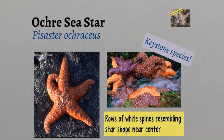Ochre sea stars are considered a keystone species in intertidal habitats. They feed mainly on mussels, but will also feed on barnacles, snails, limpets, and chitons.